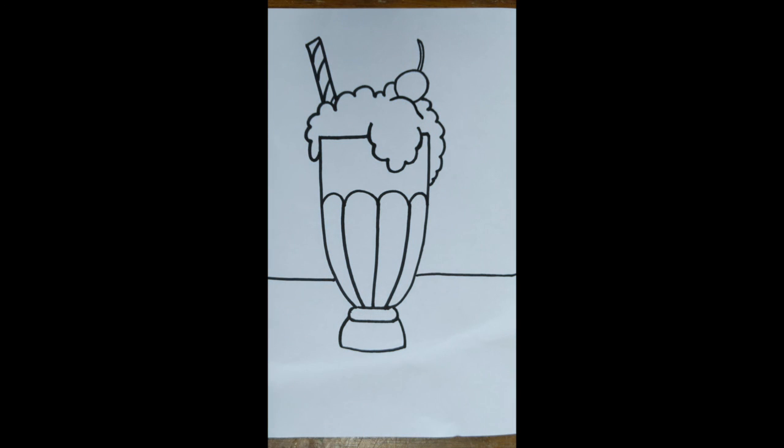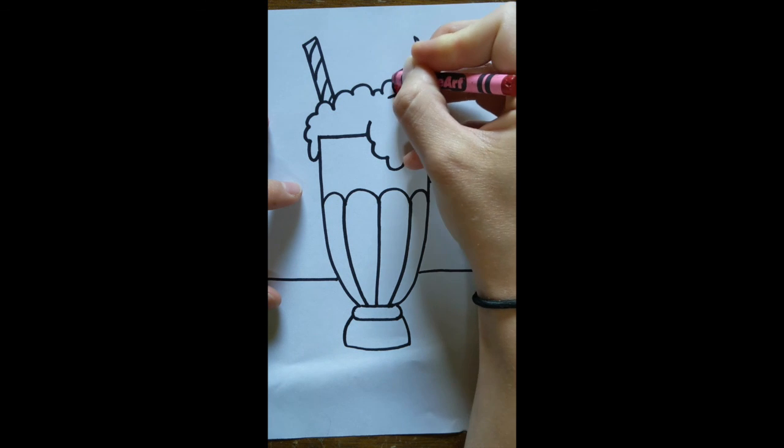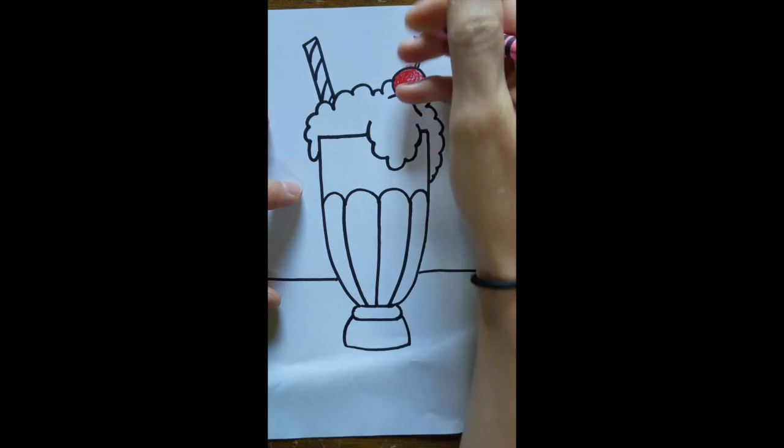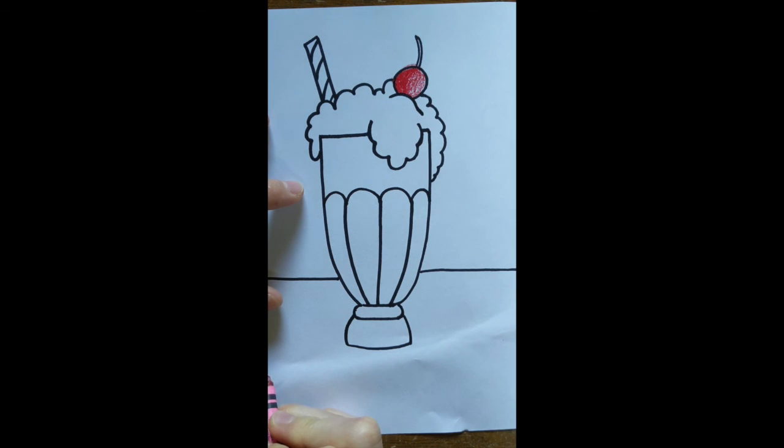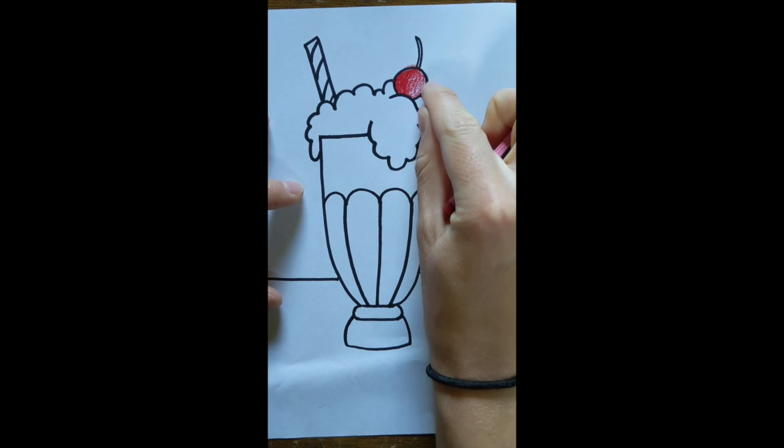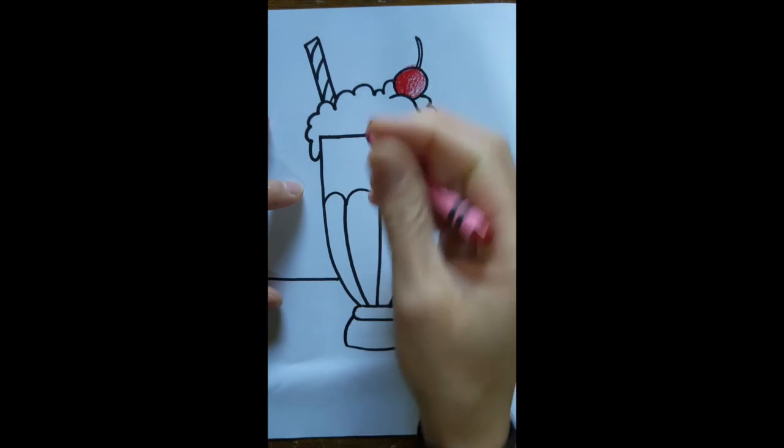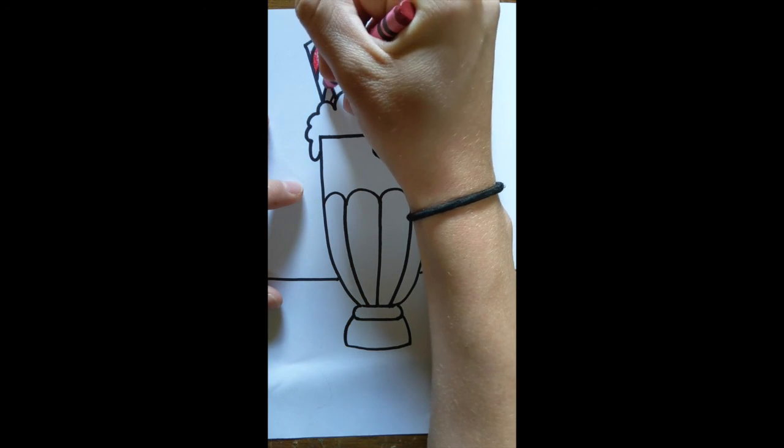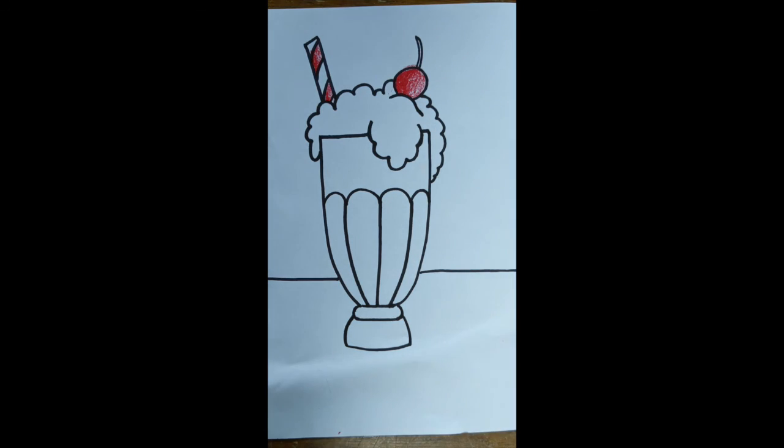And when you're coloring, you can think about if one part of your picture might look darker than the other. So maybe if the shadow's on the left side, maybe the right side of your milkshake looks a little bit lighter than the left side of your milkshake. So you can start coloring in, thinking about adding shadow that way.